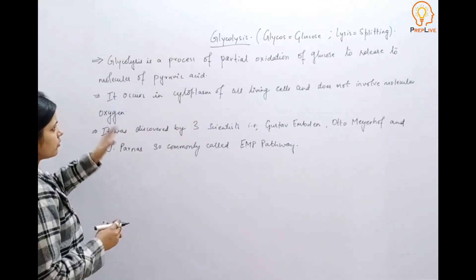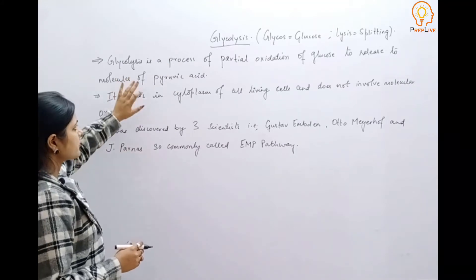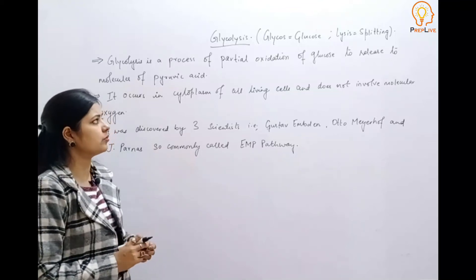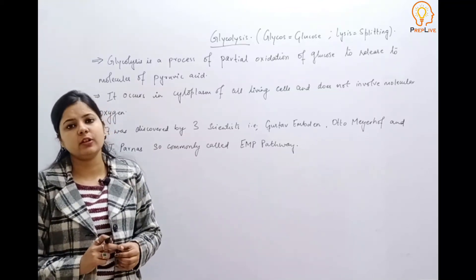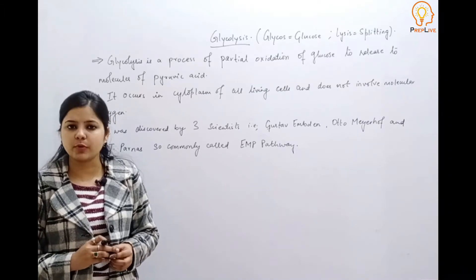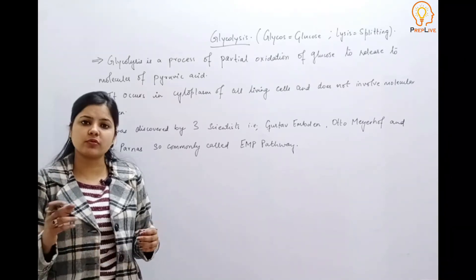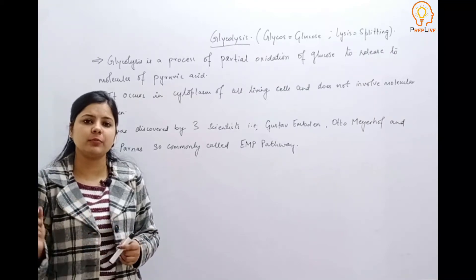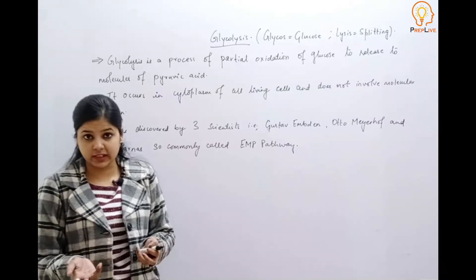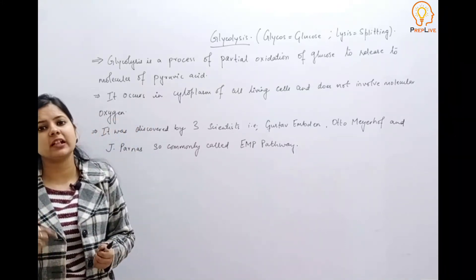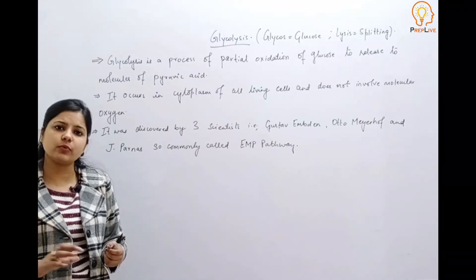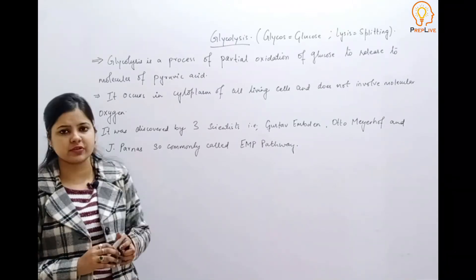Since it's a process of partial oxidation of glucose, this glucose is actually obtained from sucrose, which is the end product of photosynthesis. The ultimate breakdown of sucrose occurs in the presence of an enzyme called invertase, and it ultimately yields glucose and fructose. These molecules of glucose and fructose then ultimately enter into the glycolysis pathway.